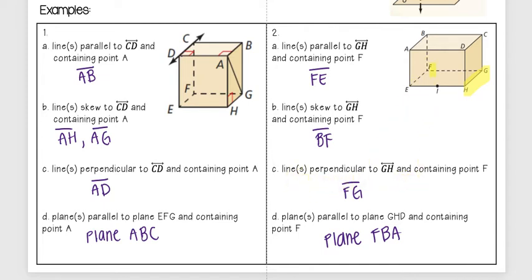And then for lines perpendicular to GH containing point F, that's going to be FG. There really should have been a box here telling you that it was a right angle, but you can kind of see in the picture as well.